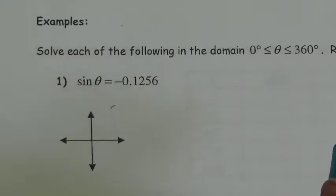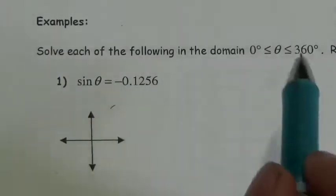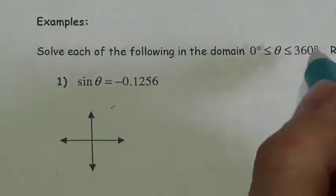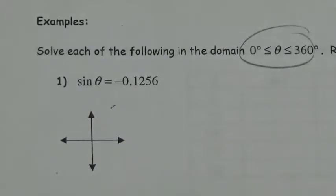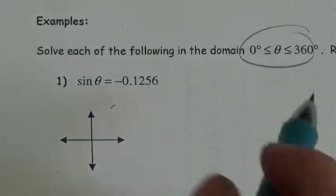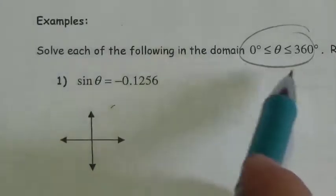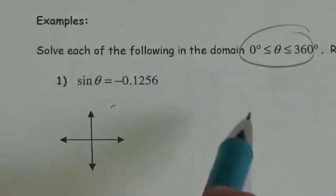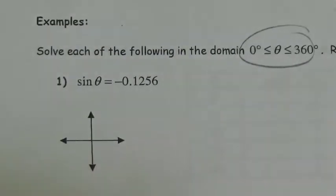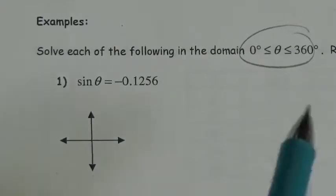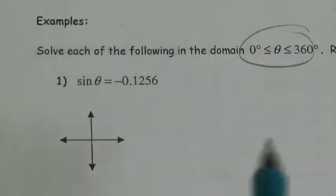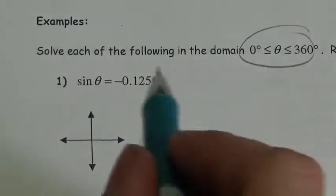In most of the questions we're going to be looking at, the angles we're looking for are going to be between 0 and 360 degrees. That's a pretty standard domain, because as we saw before, that really covers every possible direction that the terminal arm could point. Beyond 360, it starts to repeat.